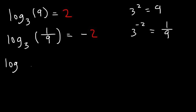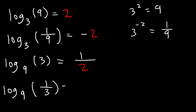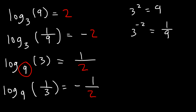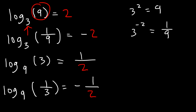What if you reverse the numbers? If log base 3 of 9 is 2, what's log base 9 of 3? It turns out that it's 1 over 2 — you flip the fraction when you reverse 3 and 9. And finally, log base 9 of 1 over 3 is negative 1 over 2. Anytime you have a fraction argument, the answer is negative. Anytime the base is larger than the argument, you'll get a fraction answer. If the argument is larger than the base, the answer is greater than 1.